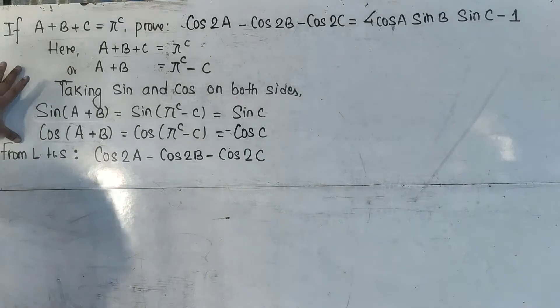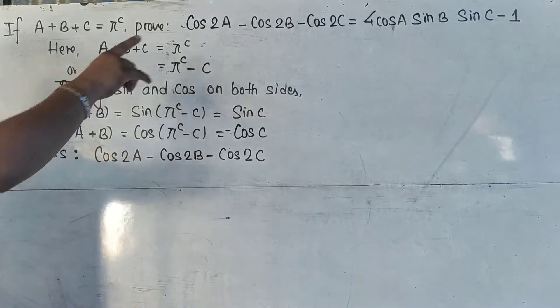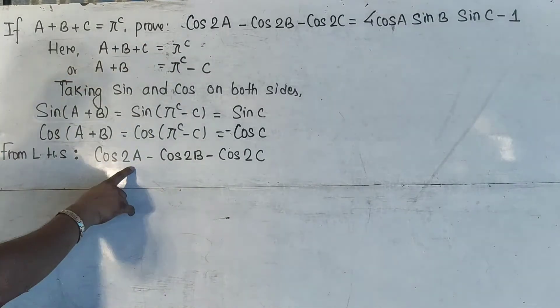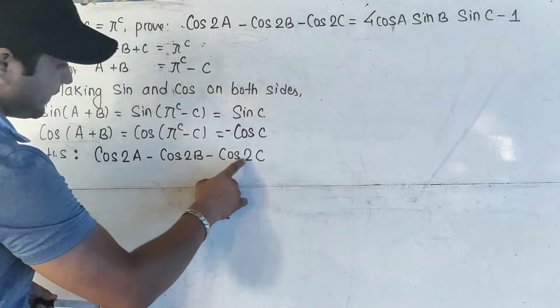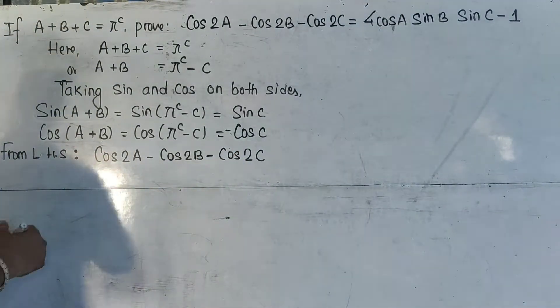This part was previously explained, so I am not repeating it here. Now on the left-hand side we have cos2a minus cos2b minus cos2c. So as our first step,